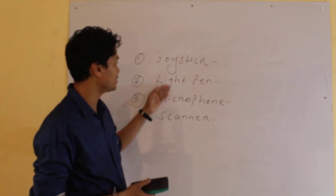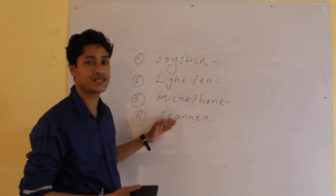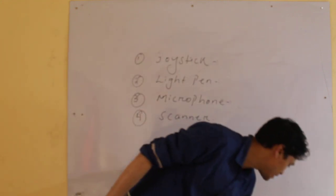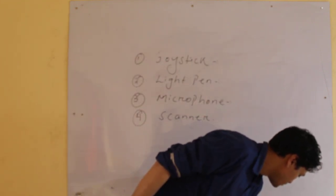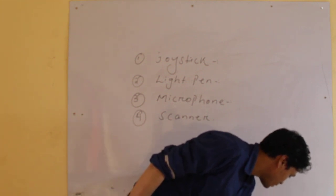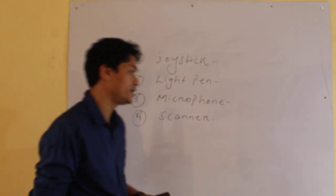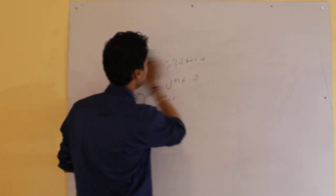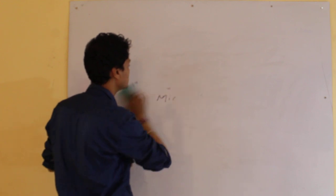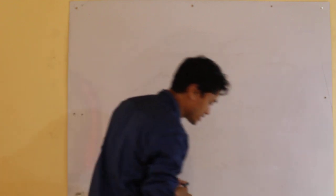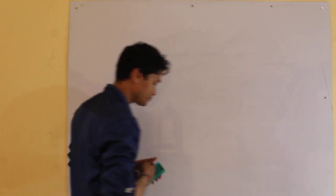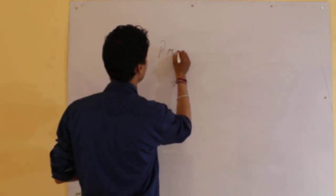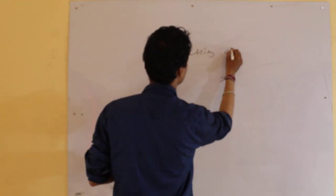Children, the use of these four input devices clear to you? Now we will proceed to the next part. We will study about the processing hardware. These were the input hardware, now we will learn about the processing devices.